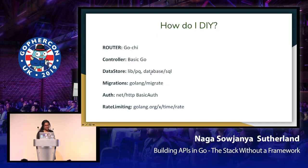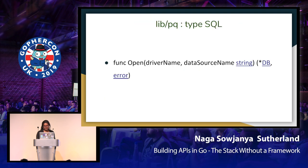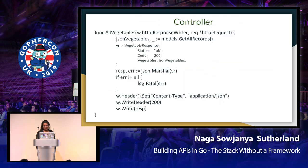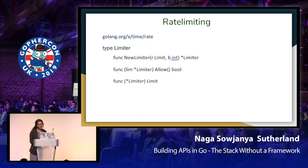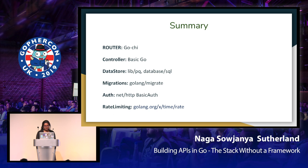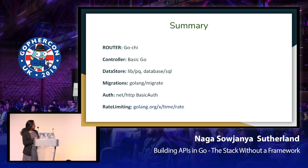The final topic is rate limiting. With the time/rate package, you can get a new limiter and impose dropping or limiting of events using Allow and Limit. To summarize: for the router I used GoShi; controller and model are basic Go; data store packages are libpq and database/sql; for migrations, golang-migrate; for auth, net/http BasicAuth; and for rate limiting, time/rate.